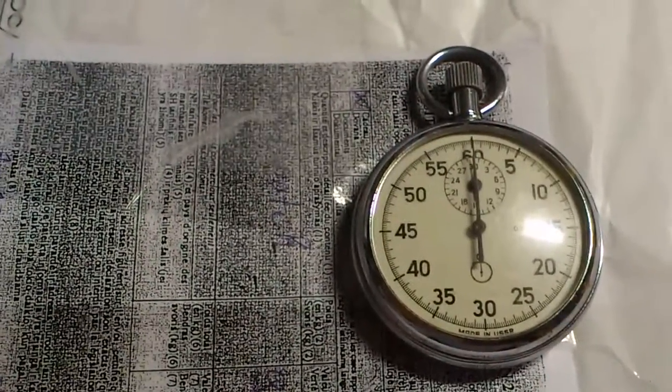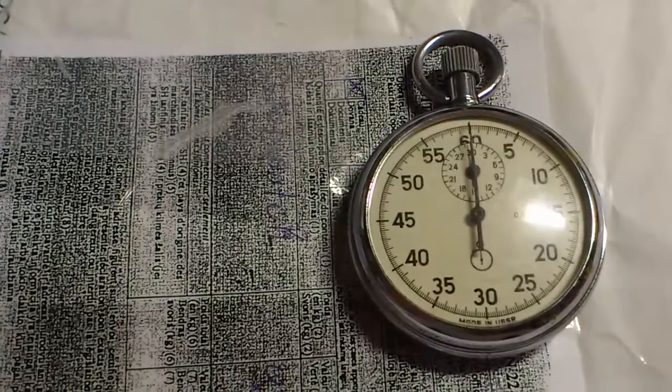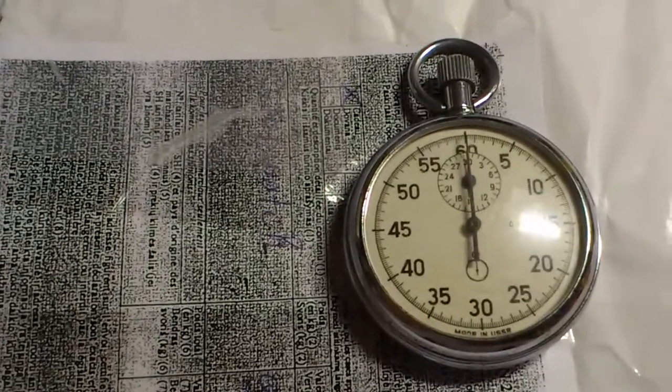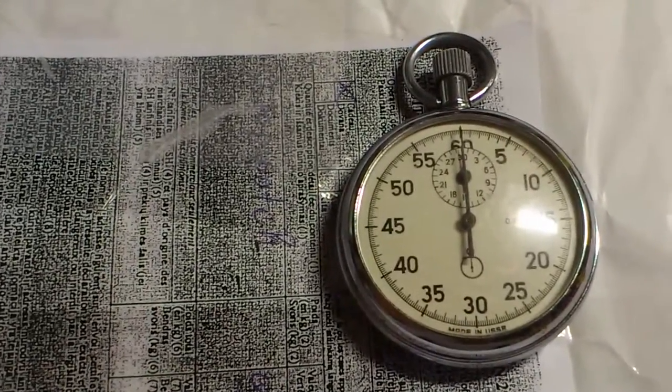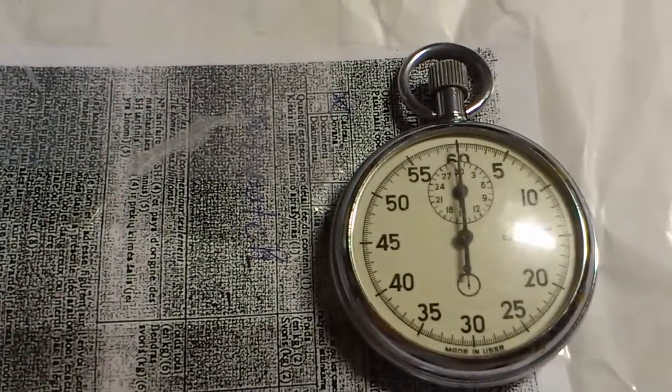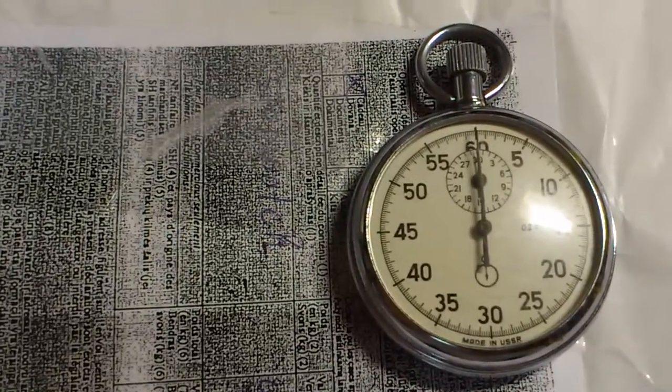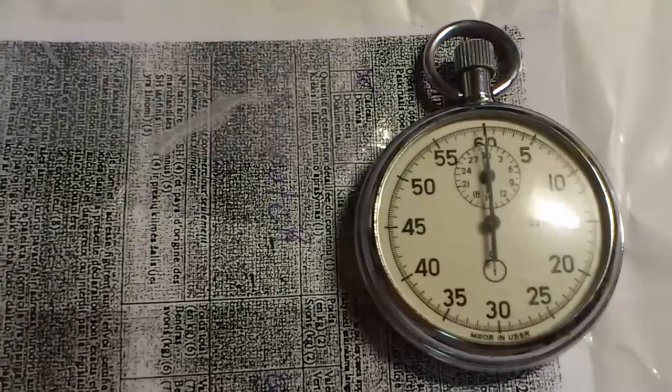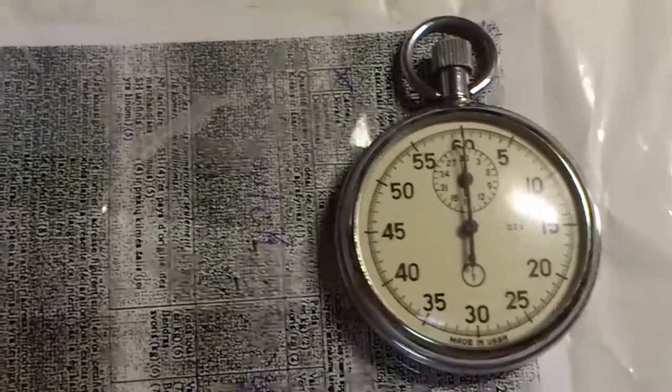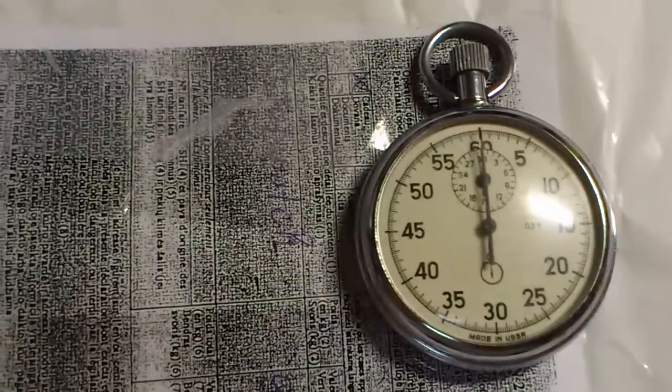Hello everyone, how are you doing? This is a stopwatch chronometer made in USSR. I bought this on eBay at the price of $17 plus $12 shipping, so I got it under $30. I think it's a great deal indeed.